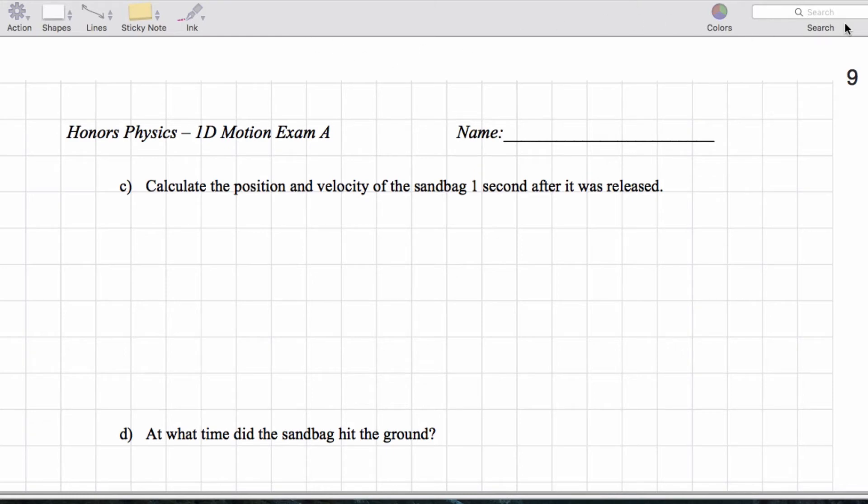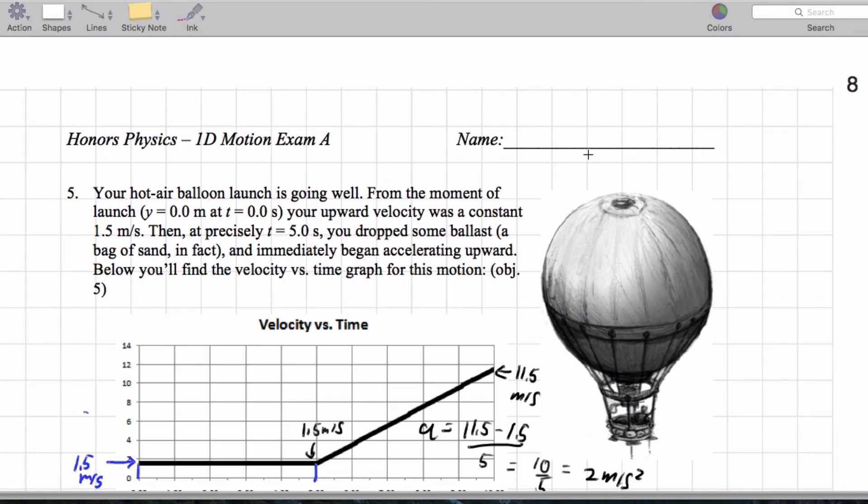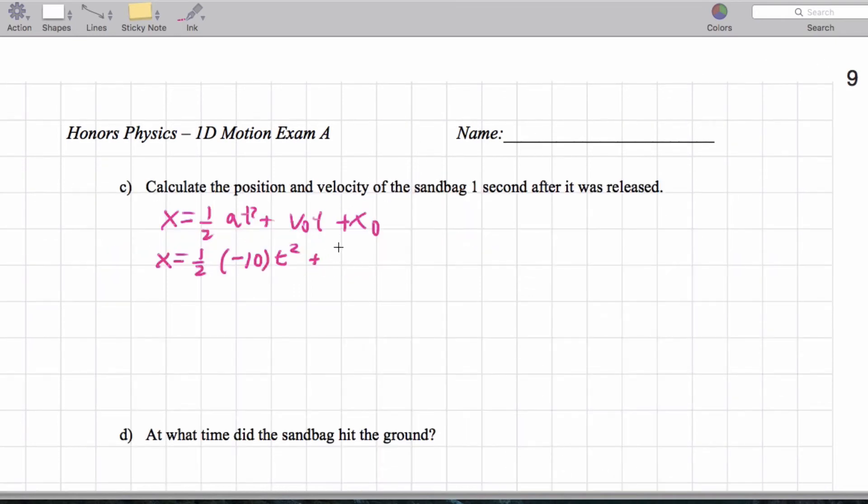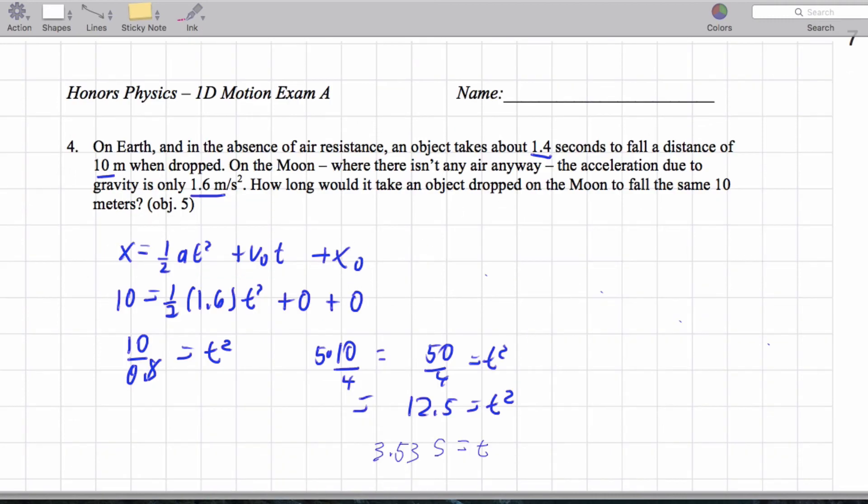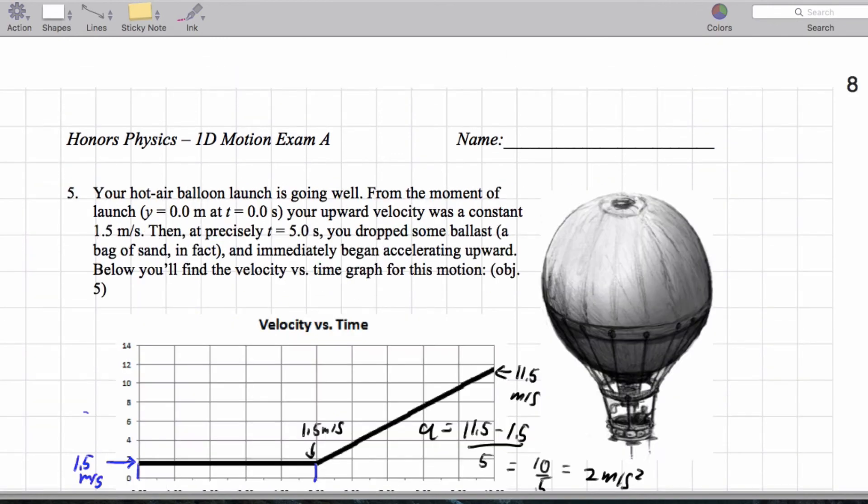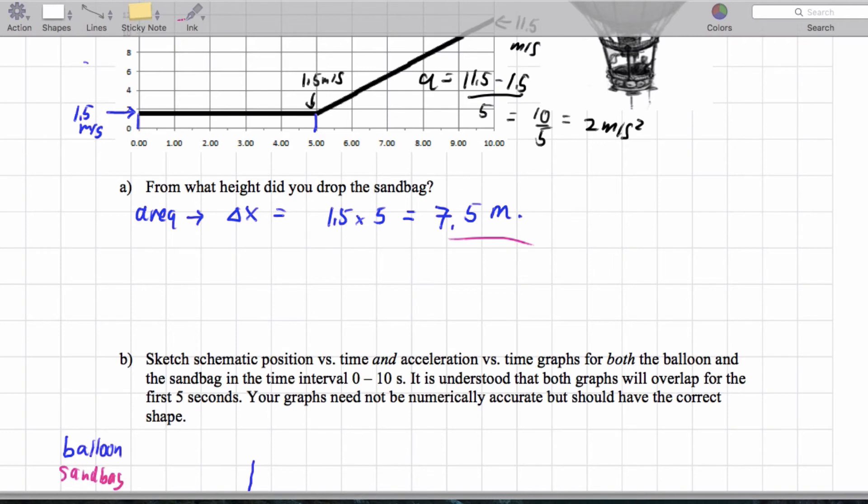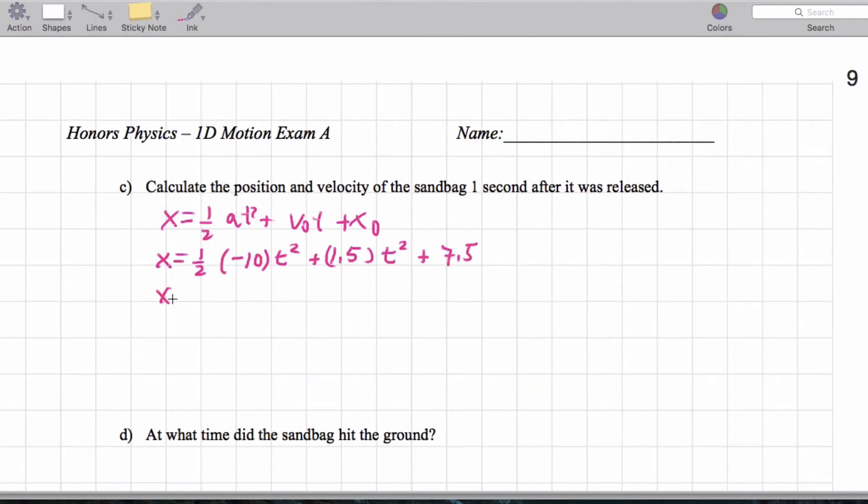Now for part c, we want to calculate the position and velocity of the sandbag one second after it was released. So the position, x is 0.5 at squared plus v naught t plus x naught. So the position, its position is going to be 0.5. Now its acceleration is negative 10 t squared, but it was moving at an initial speed when it was dropped of positive 1.5 t. And its initial position was, we actually looked at that, the position it was at when it was dropped was 7.5 meters. So after one second, we have x is going to be negative 5 times 1 plus 1.5 plus 7.5. It's going to work out to be 4 meters.